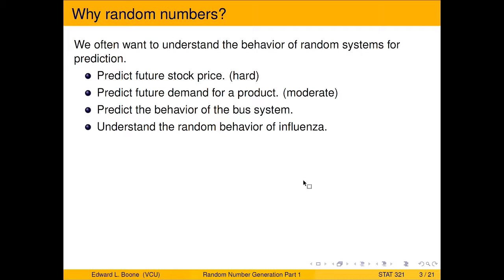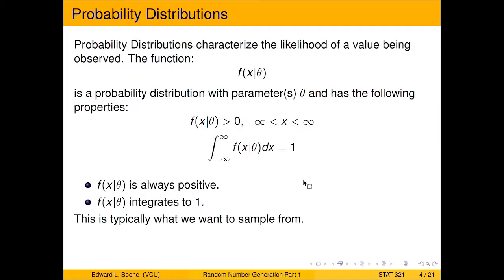And if you don't use the randomness, it becomes very hard to understand the true behavior. You might be able to say I predict one thing, but you may not understand about how uncertain you are about those. Another one is understanding the random behavior of influenza—you could use random numbers for that as well.